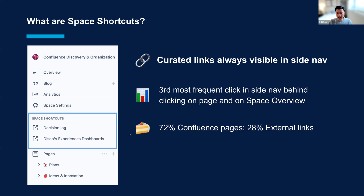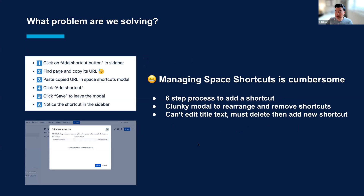It gets a lot of usage. You can add any link to the shortcuts and we see that about 70% of shortcuts are Confluence pages and about 30% are non-Confluence pages or external links. So let me give you an overview of why we're doing this work. If any of you have used shortcuts before, adding a shortcut or managing them is a bit cumbersome. Just adding a shortcut is a six-step process, and our UI could use a refresh as well. There are also some missing features — if you want to edit a shortcut or update the link or title text, you have to delete that shortcut and then add a new one.